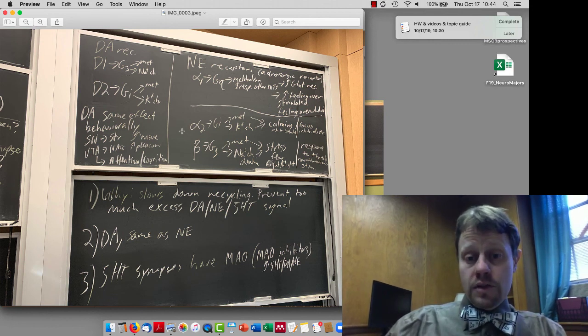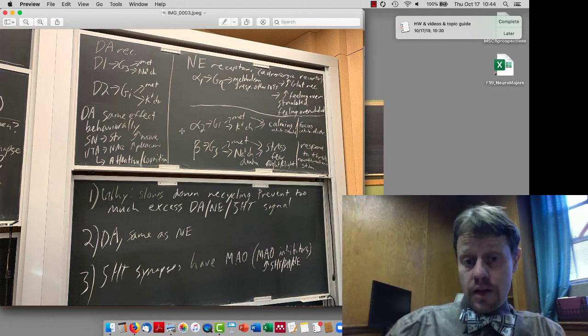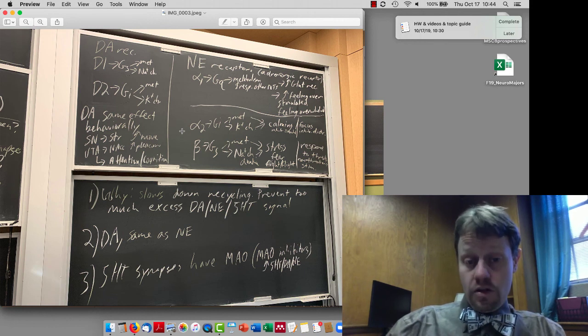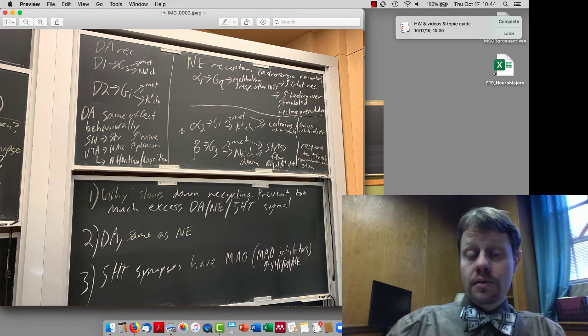With alpha-2 receptors, they have a calming effect. They're inhibitory. They have a calming effect that actually has some antidepressant effects, but also is involved in focused and calm attention. And the beta receptors also have some attentional effects. These are stimulatory, but also have some associations with activating stress, fight-or-flight responses, and so on.